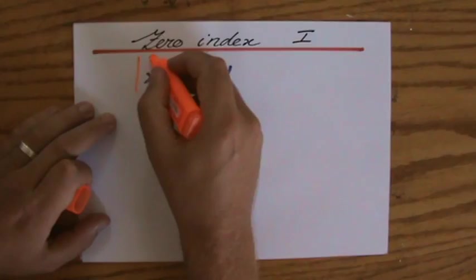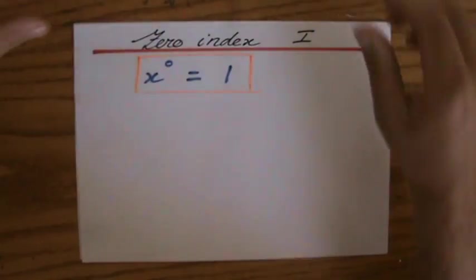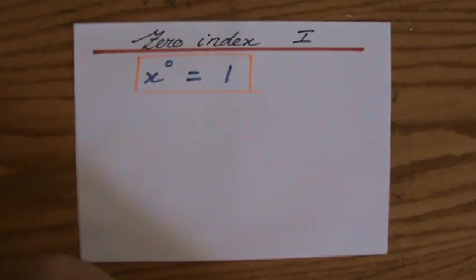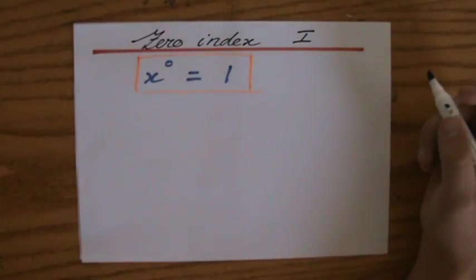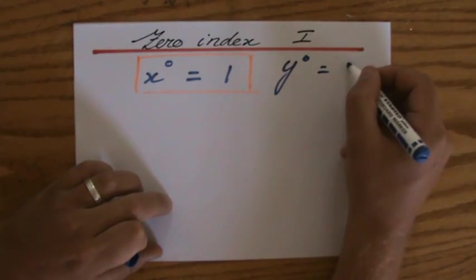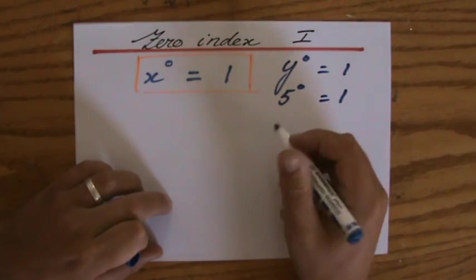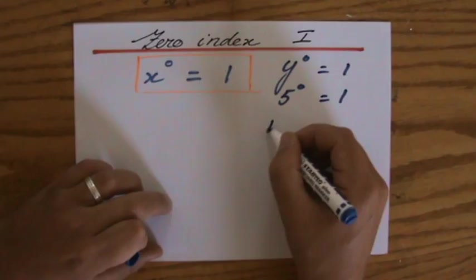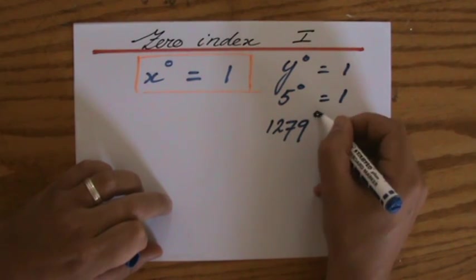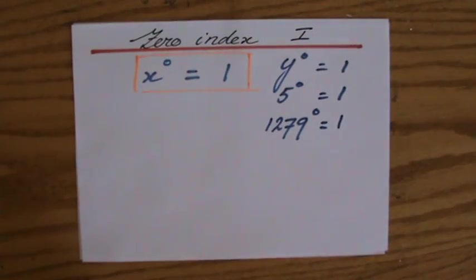In maths, you hardly have to remember anything if you understand what you're doing. I'm going to show you why y to the power 0 equals 1 — because actually everything to the power 0 equals 1. So y to the power 0 equals 1, 5 to the power 0 equals 1, and indeed 1279 to the power 0 also equals 1.